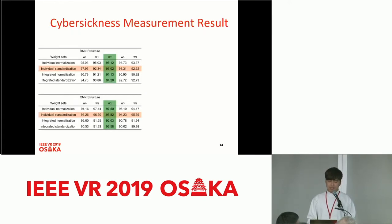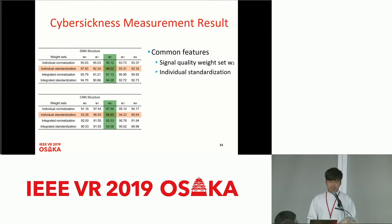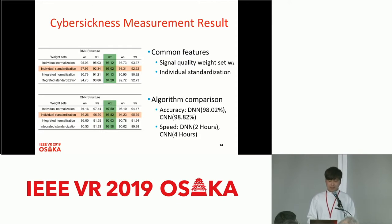We create 20 different datasets by combining signal weight sets and normalization methods. Both DNN and CNN achieved the best results when signal quality weight set Weight 2 and individual standardization technique are combined. The accuracy of the CNN algorithm is slightly better than that of DNN. However, CNN took about 4 hours to run, while DNN took about 2 hours in this study.